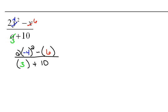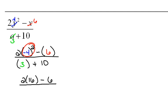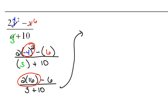Now again we simplify. According to order of operations, we need to do our squaring first. So negative 4 squared means negative 4 times negative 4, which is 16. Then we have 2 times 16 — the signs are the same, so it will be positive 32. Copying everything else: minus 6 over 3, plus 10.